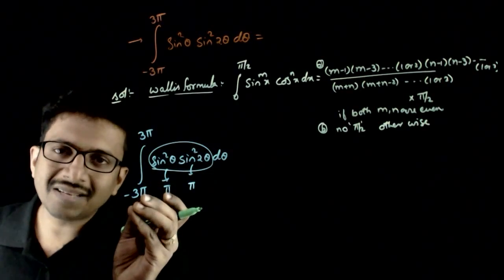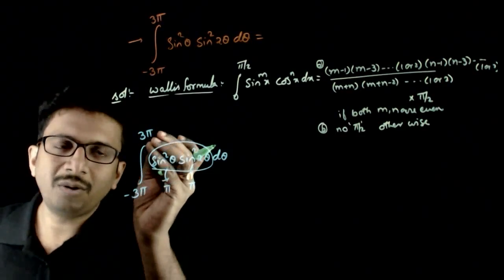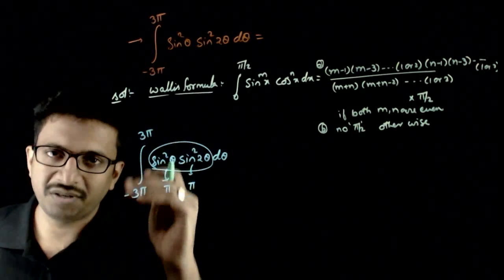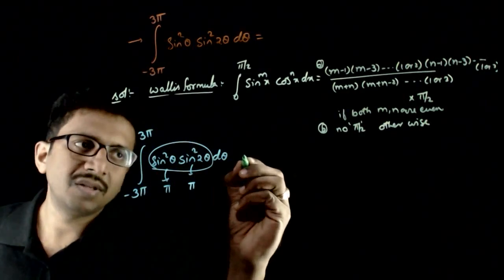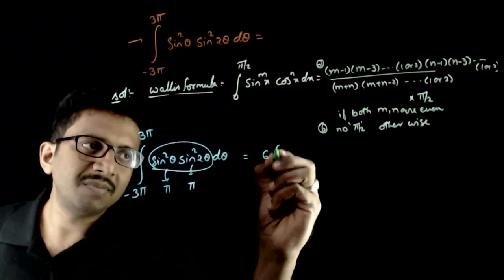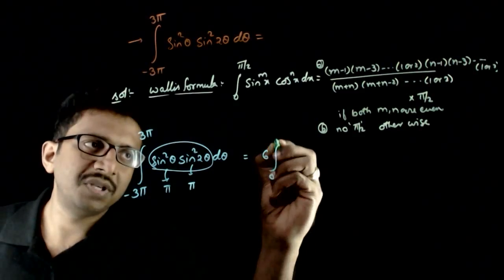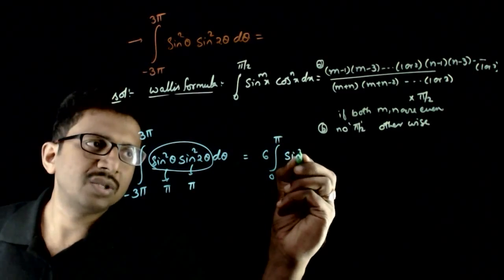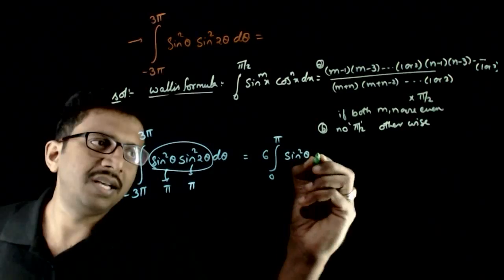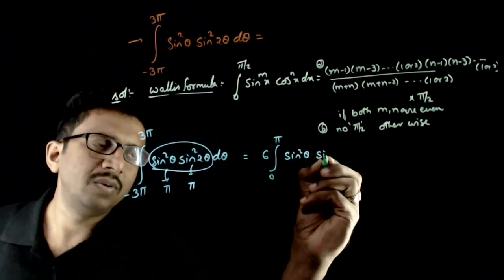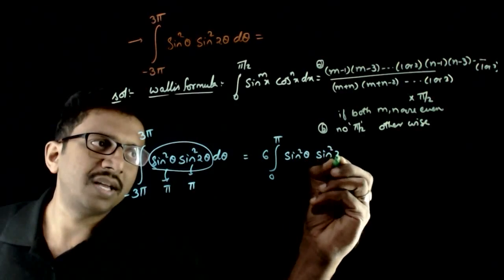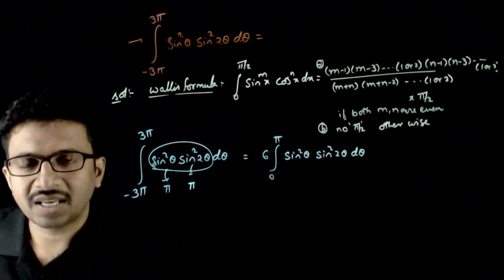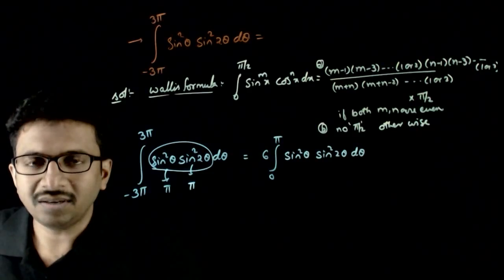You are going from minus three times the period to plus three times the period, so effectively you have six periods. That is equal to six times the integration from zero to pi of sine square theta into sine square two theta d theta.